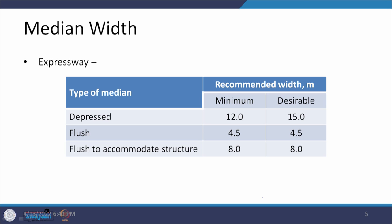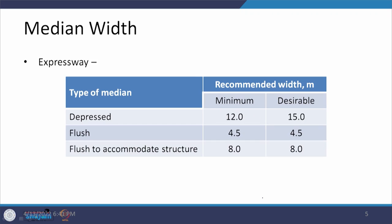For the recommended width of the median on expressways, for a depressed median it is minimum 12 meters, but desirably 15 meters. If you take one lane on either side — 3.5 plus 3.5 equals 7 meters — you are left with a minimum of 5 meters for the depressed median. For a flush median it is 4.5 meters, and if an overhead structure has to be accommodated with clearances on the column sides, then it is 8 meters.